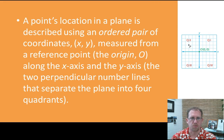This is review for you from algebra. A point's location in a plane is described as an ordered pair of coordinates, (x, y), measured from a reference point, the origin O at (0, 0), along the x-axis and the y-axis, the two perpendicular number lines that separate the plane into four quadrants. X goes horizontally, y goes vertically, quadrants one, two, three, and four going from the upper right counterclockwise. X gets positive this direction and negative this direction. Y gets positive this direction and negative this direction.